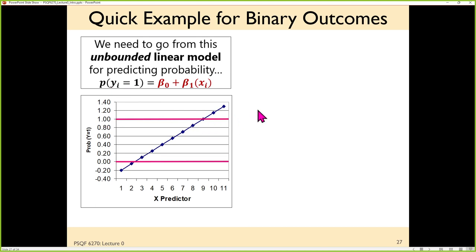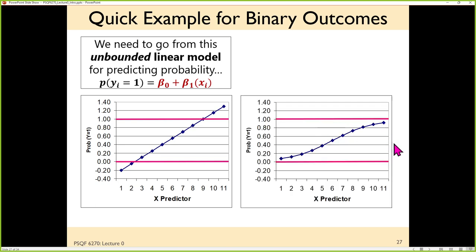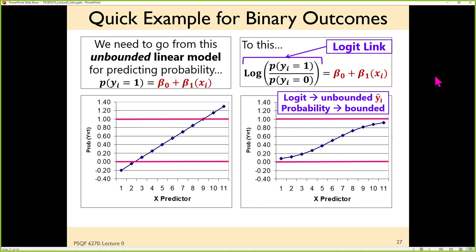What if we just took that straight line and kind of bent it so it understands it can't go out of the boundaries? That's what we need. Here's how we do it — our new best friend, the logit, otherwise known as log odds. A logit changes the outcome to be predicted from something that has boundaries to something that is unbounded. The first step: take the probability of a 1, divide it by the probability of a 0. That piece in parentheses is what's known as odds. If we take the natural log of that ratio — that's what's known as a logit or log odds.